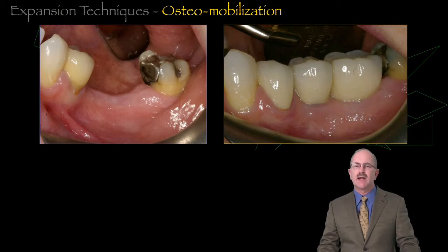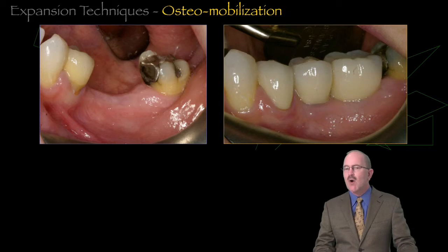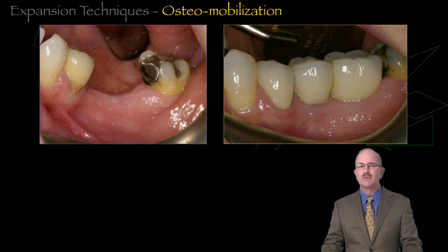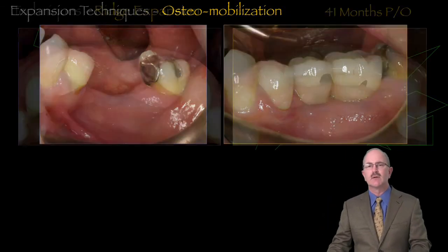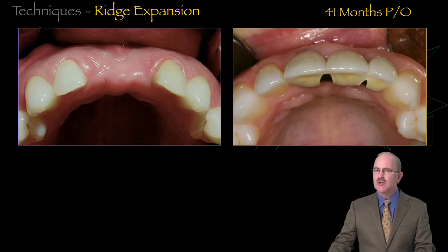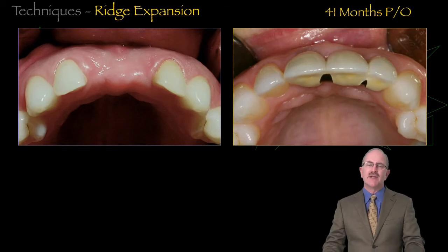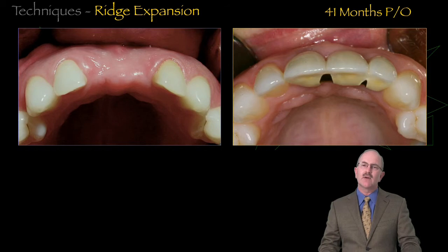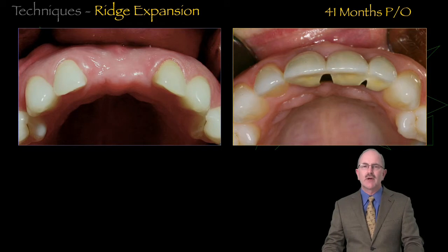And we were able to very nicely restore both hard and soft tissue contours for a long-term stable result. Here's an example of a patient at three and a half years, with Ridge Expansion in the number 8 location, restoring the alveolar contour.